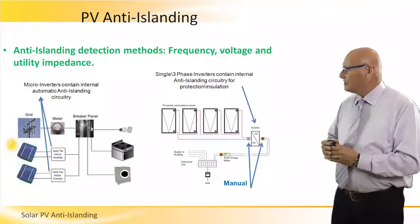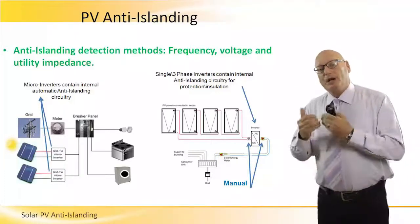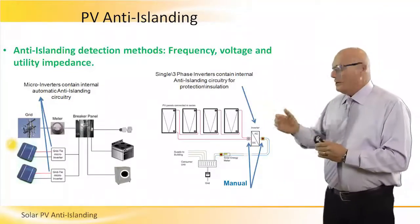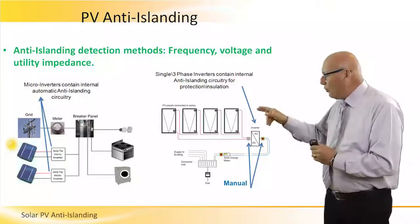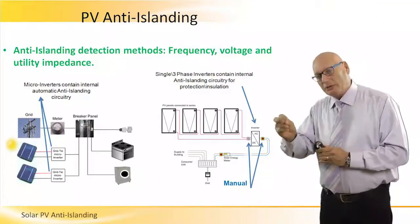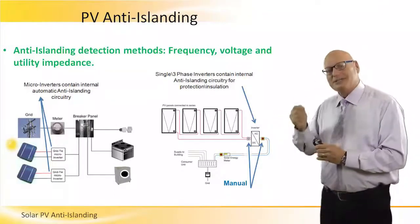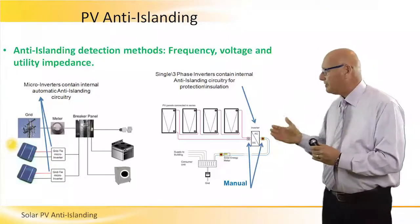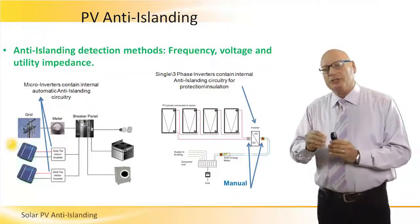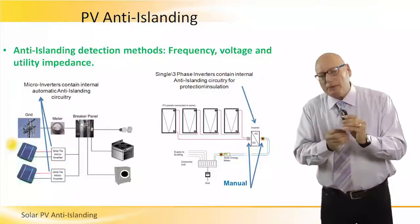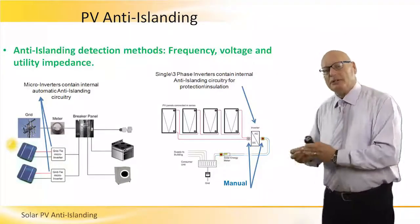On the right-hand side, we see another configuration: one large common inverter shared by all the panels, as opposed to the micro inverter approach where each panel has its own. This single inverter can be single-phase or three-phase, and it internally contains anti-islanding circuitry for protection and isolation. So there are two configurations: personal micro inverters per panel, and a common inverter per array.